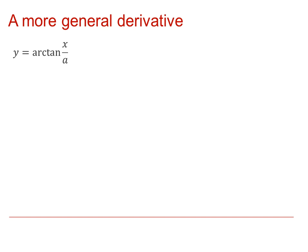A more general derivative can be found in a similar method. So if we've got y equals Arctanx over a, then this time tangent of y is equal to x over a.